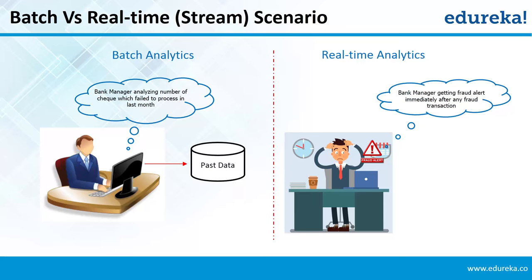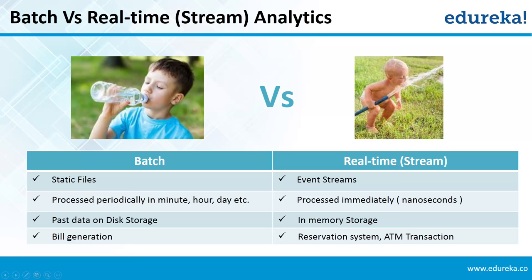Let us quickly go through the differences between batch and real-time analytics. In batch analytics, static files are processed, whereas in real-time analytics, event streams are processed. Batch analytics happens periodically, whereas real-time analytics happens spontaneously. In batch analytics, data is stored on disk, whereas in real-time analytics, it is stored in memory. If you have any questions, please comment your doubts and queries.